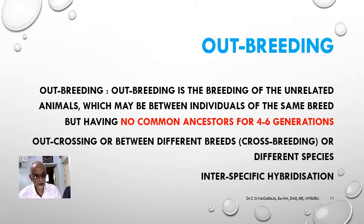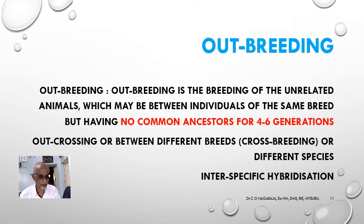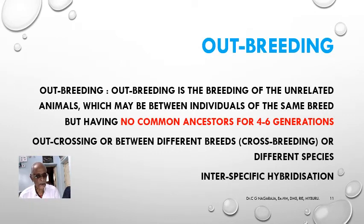Outbreeding refers to breeding of unrelated animals — individuals that do not come from the same pedigree or parentage. They may be of the same breed but not from the same parental generation, and may not share any common ancestors. Such superior male and superior female animals are mated to get a good progeny with better yield.